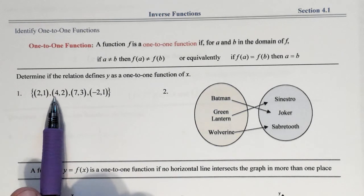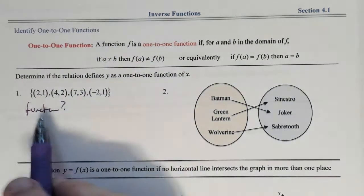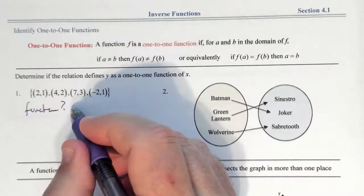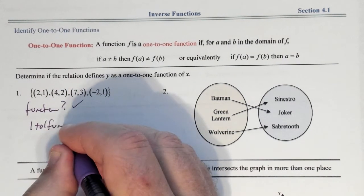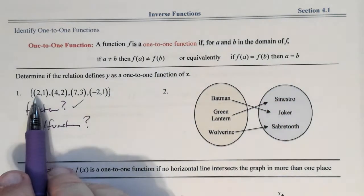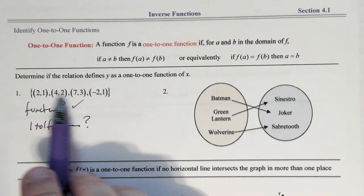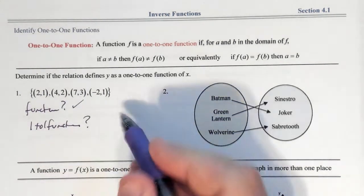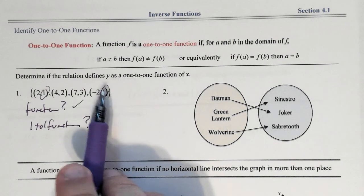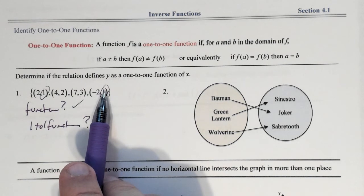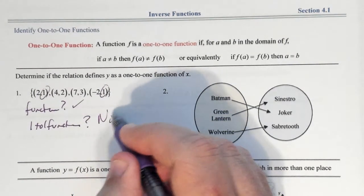Two things to check: one, it has to be a function — no repeating X values. Two, you can't have any repeating Y values either. For example, with points (2,1), (4,2), (7,3), (−2,1): the X values 2, 4, 7, −2 are all different, so it is a function. But the Y value 1 appears twice — for X=2 and X=−2. So it is not a one-to-one function.